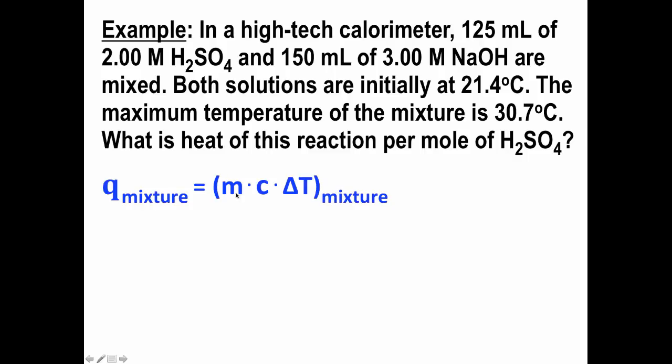So in our Q equals mc delta T, the mass of our solution is going to be the sulfuric acid and the sodium hydroxide mixed together, because both of those things are going to be reacting, and both of those things are going to be absorbing energy. So 125 milliliters of solution and 150 milliliters of solution is about 275 milliliters of solution, and since the solutions are aqueous, then they have densities of approximately 1.0, and so we can say that we have about 275 grams of solution.